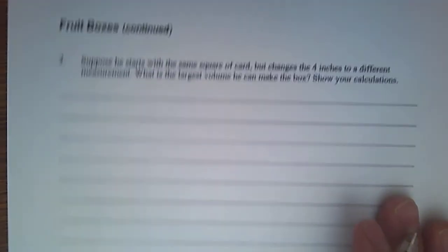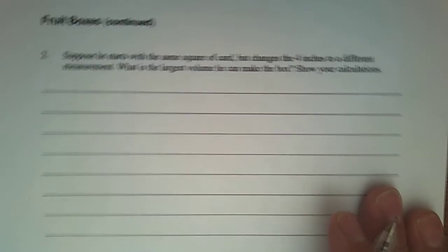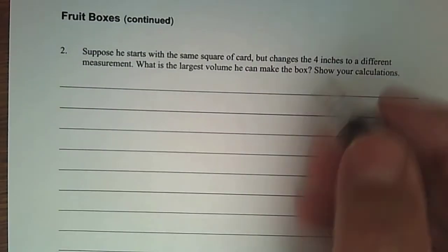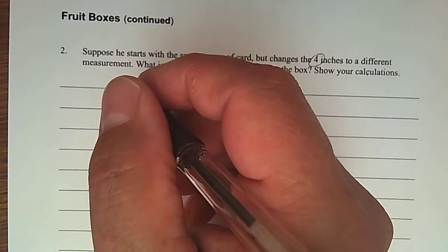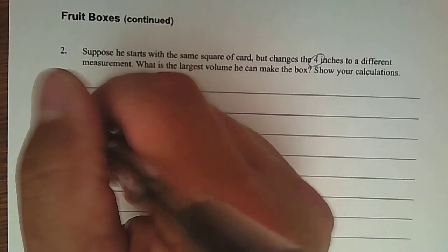Turn the page for the second one. Now on the second page, we're taking those same fruit boxes. But suppose he starts with the same square of card, but he changes four inches to a different number. What is the largest volume he can make from the box? Show your calculations.